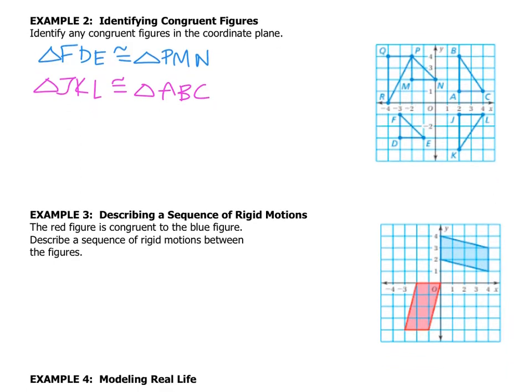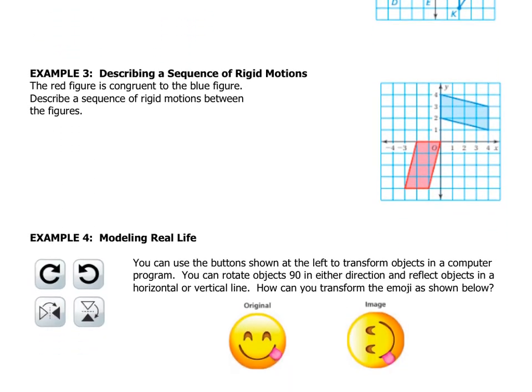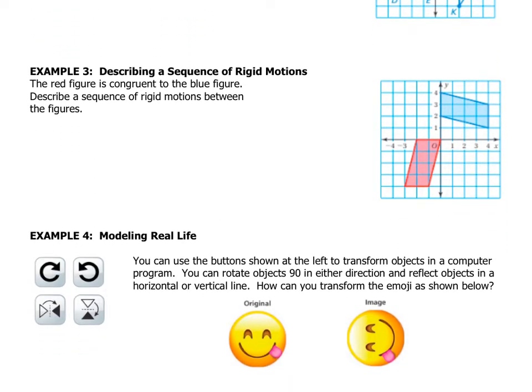Moving down, let's look at a sequence of these rigid motions. The red figure is congruent to the blue figure. Describe a sequence of rigid motions between the figures. Now, I want you to understand that there are usually multiple ways to create a sequence. So your sequence that you're imagining right now, if you have one, might be different than mine. I'm just going to give you one.